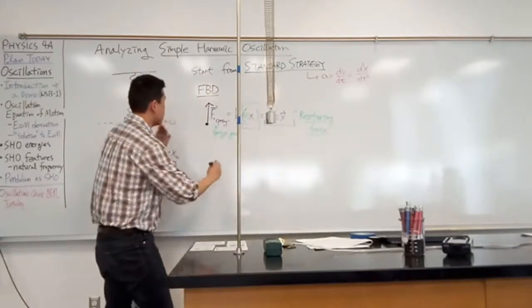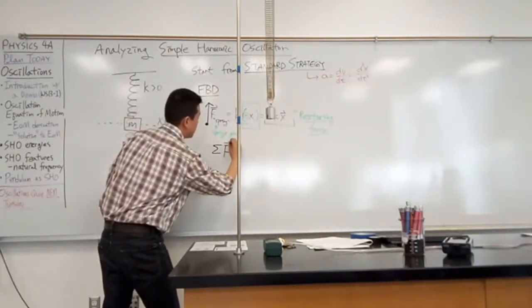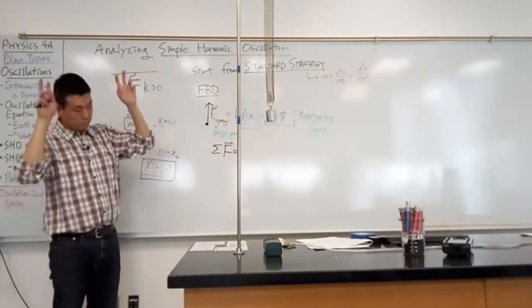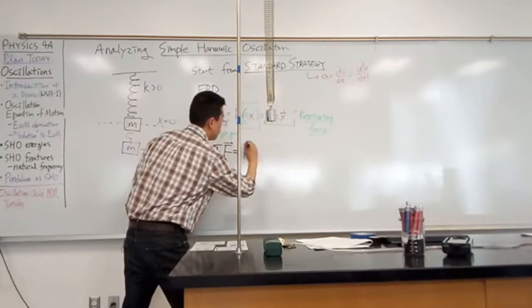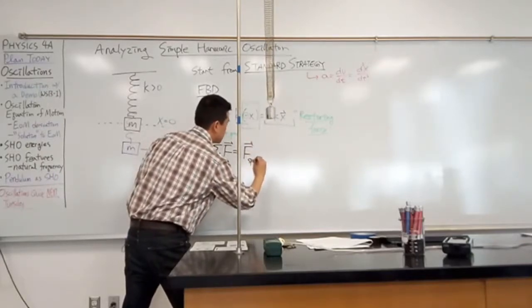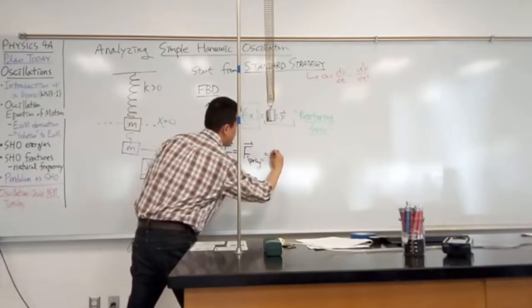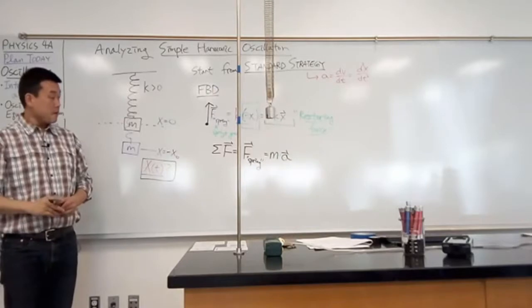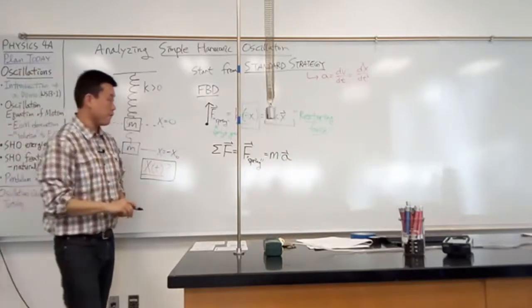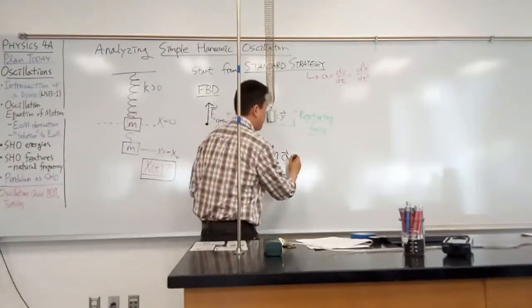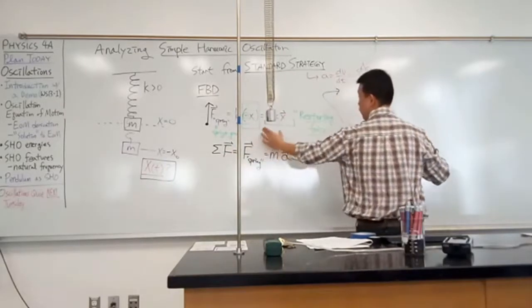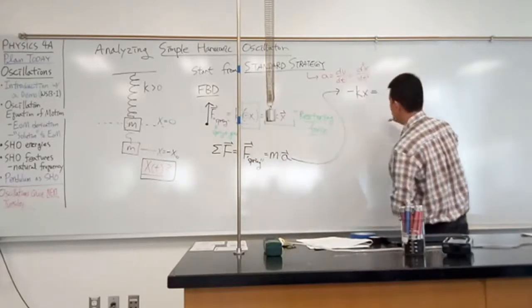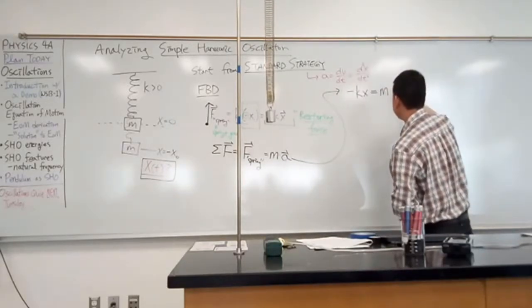So Newton's second law says that net force, in this case, it's just the spring force. Once again, quote-unquote spring force. So my spring force is equal to mass times acceleration. So from this, I can write this down that my spring force or minus kx is equal to mass times acceleration.